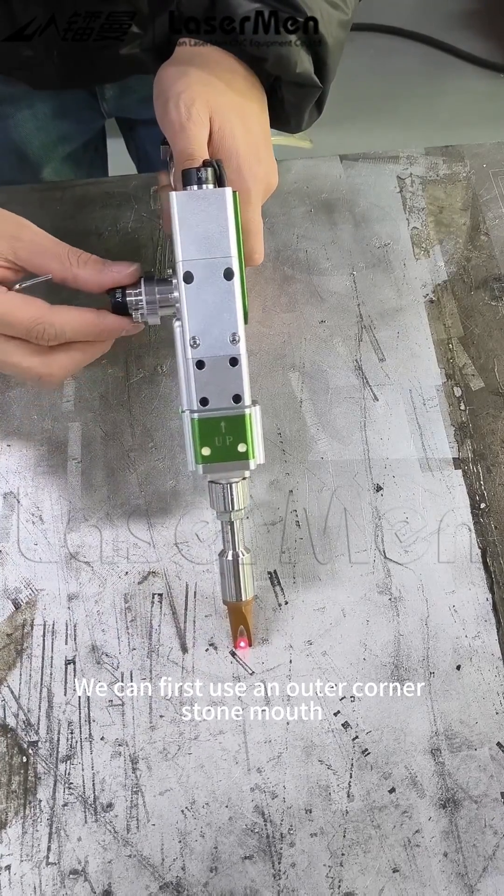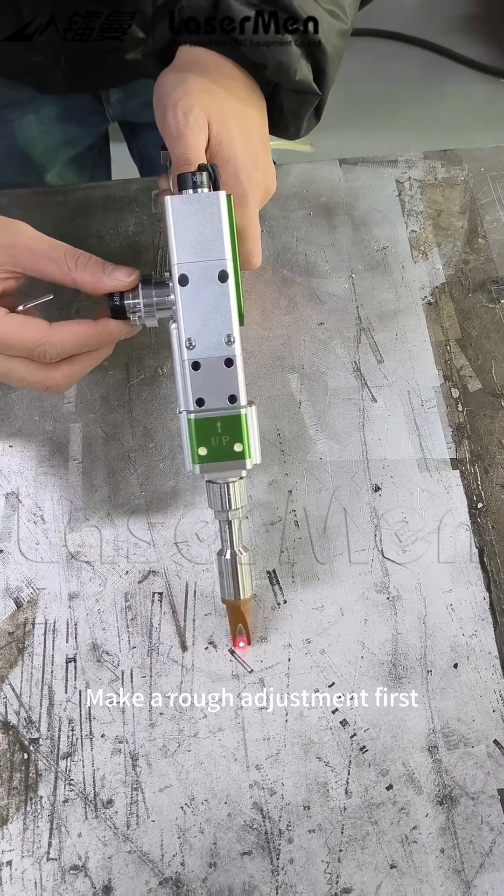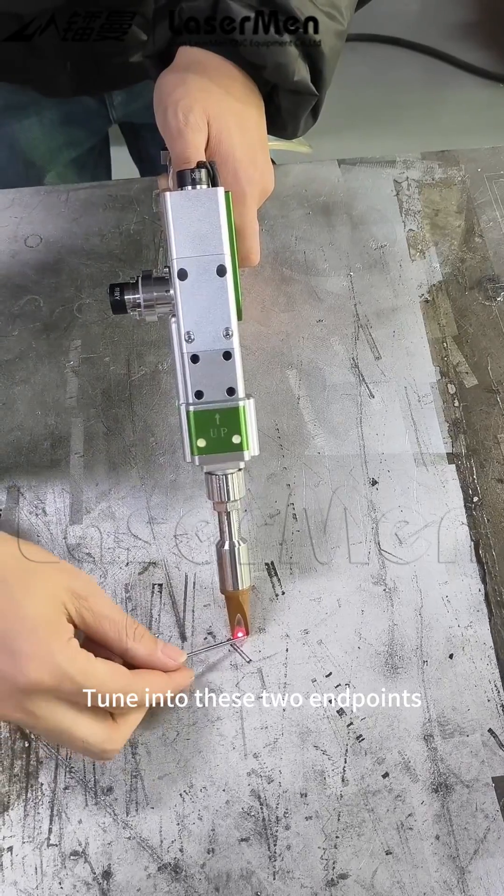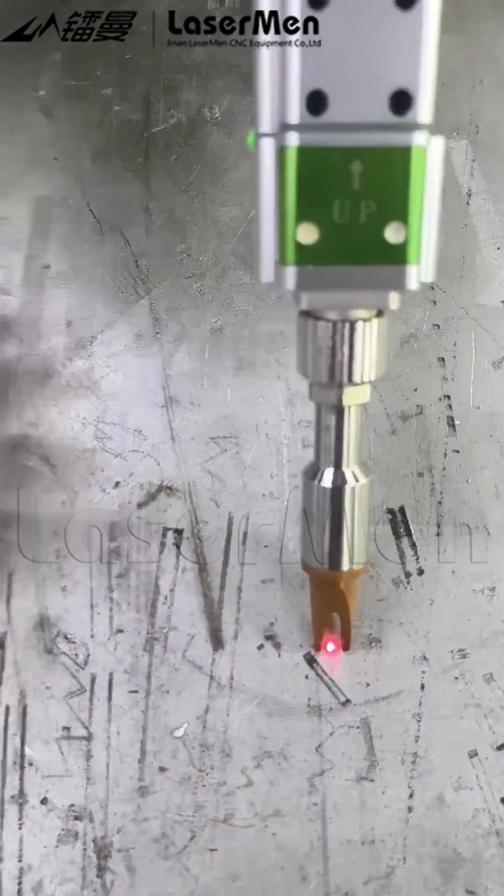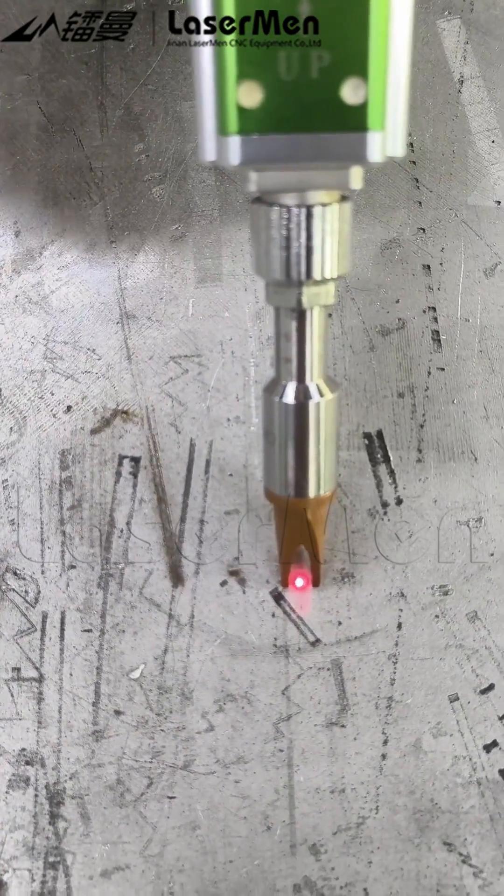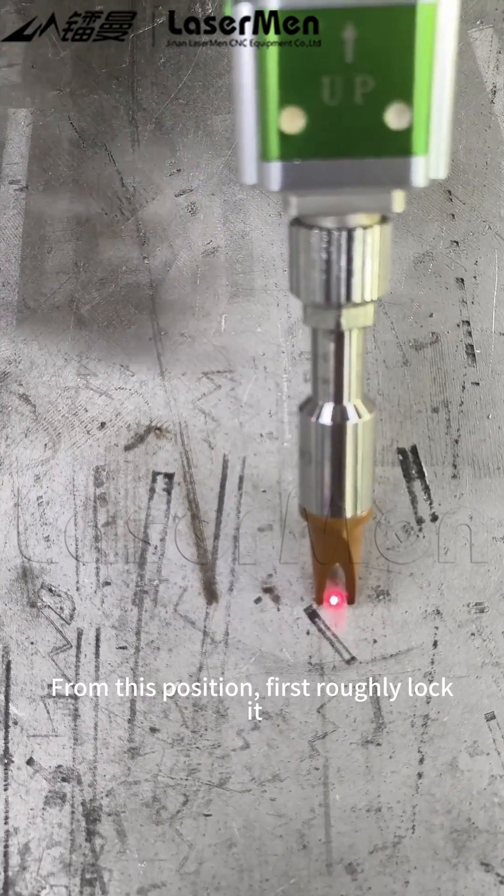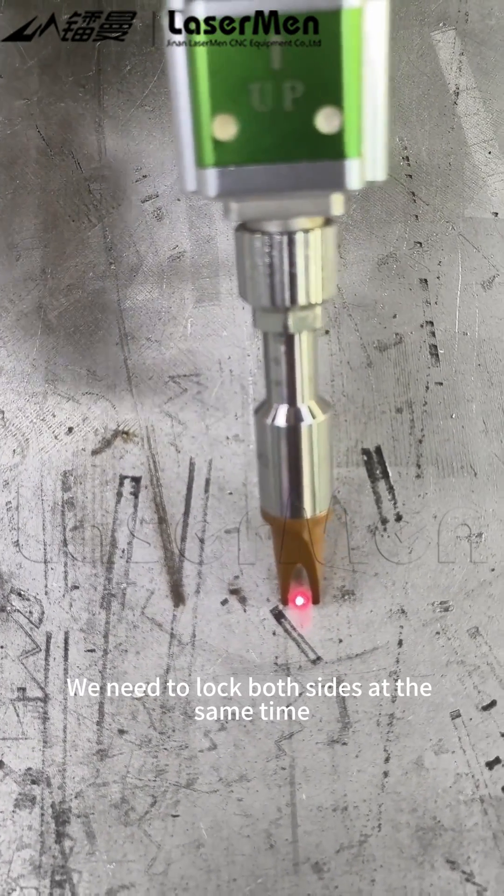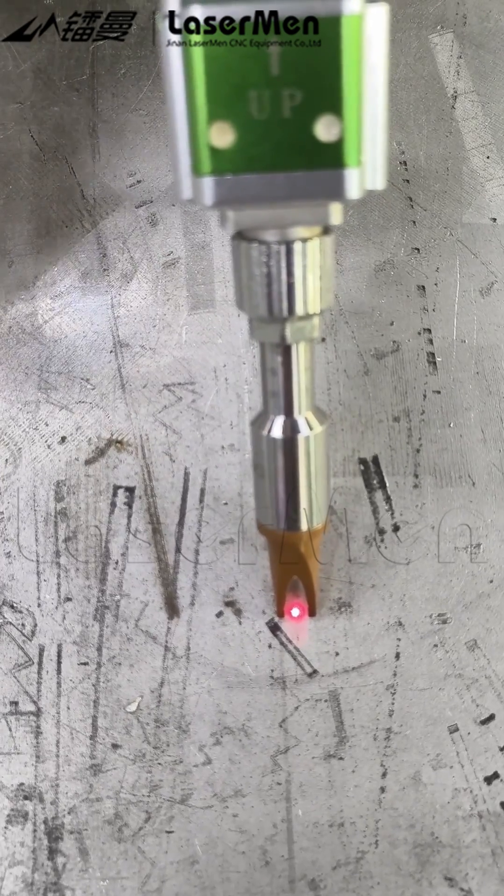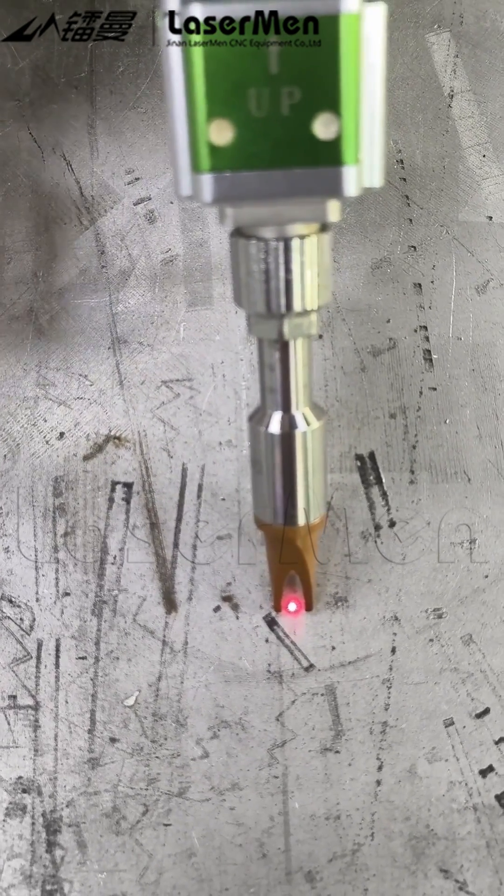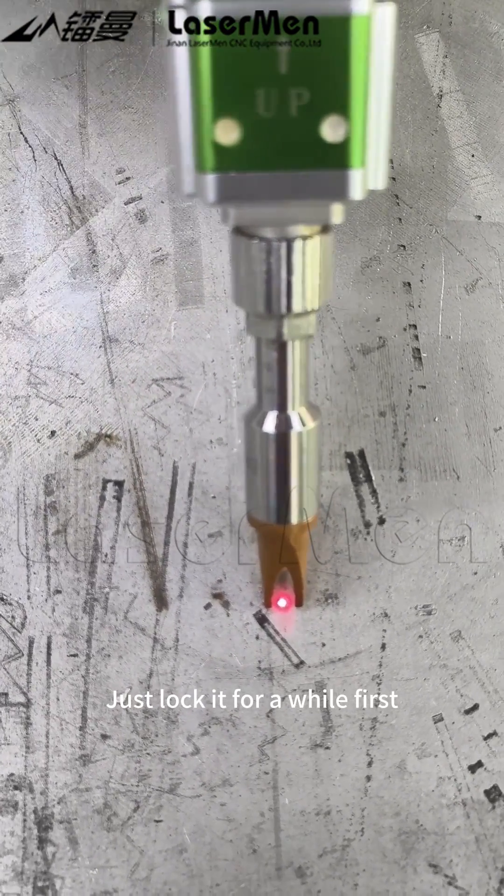We can first use an outer corner stone mount. Make a rough adjustment first. Tune into these two endpoints. From this position, first roughly lock it. We need to lock both sides at the same time. Just lock it for a while first.